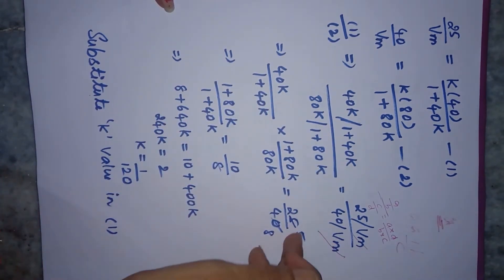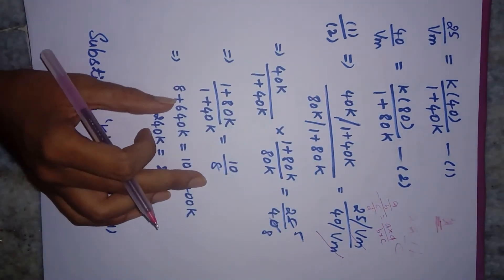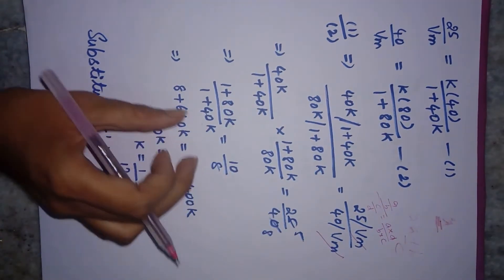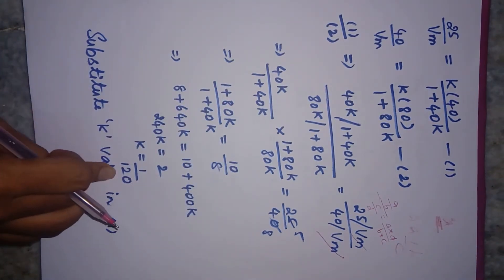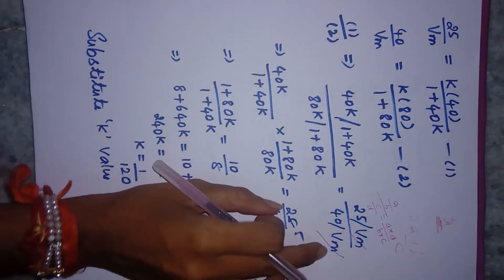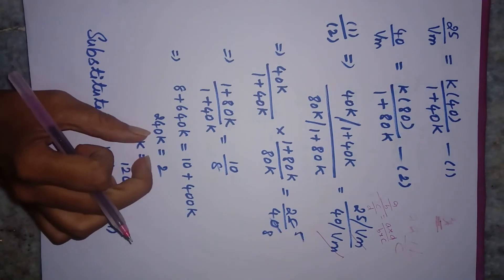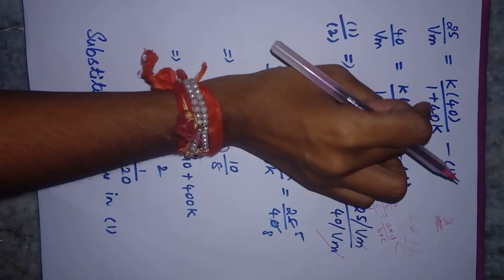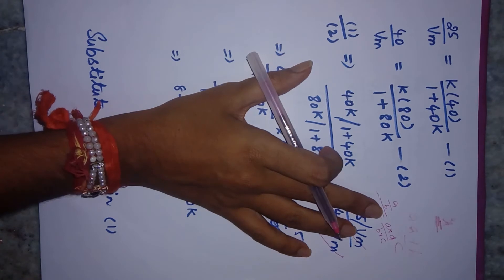If you solve this, you'll get K = 1/120. Why are we dividing? When you divide, Vm gets cancelled. Once Vm cancels and we get the K value, we can back-substitute K into the original equation to find Vm. You need to understand when to subtract, add, or divide.